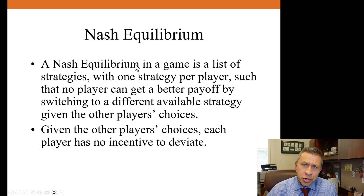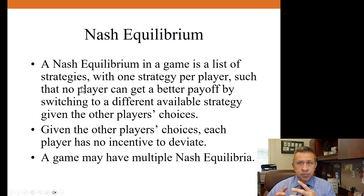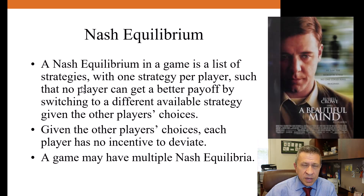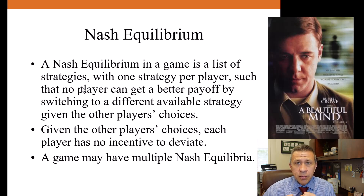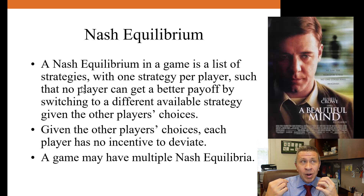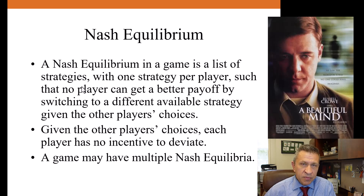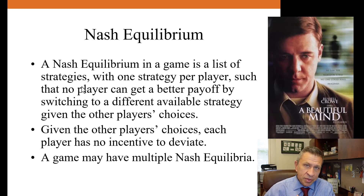A game could have one Nash Equilibrium or it could have multiple Nash Equilibria. The term comes from mathematician John Nash, featured in the movie A Beautiful Mind. John Nash actually won a Nobel Prize in economics in 1994 for his work within game theory. The Nash Equilibrium concept really helped popularize game theory because it showed how relevant it could be in thinking through problems. Game theory really exploded after the work of John Nash, which was interesting because he didn't do all that much research in this area, but what he did was really impactful.